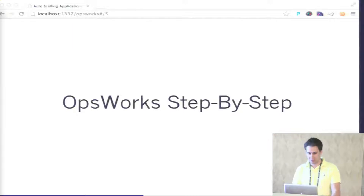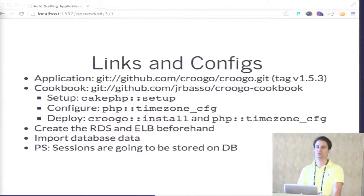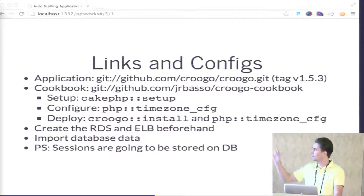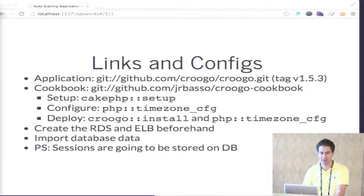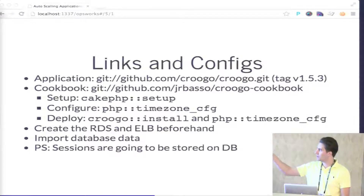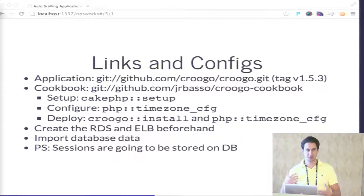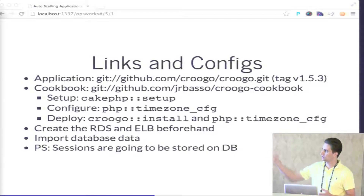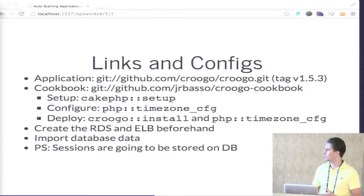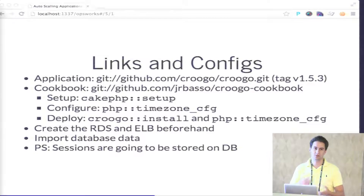I'll be showing a step-by-step of OpsWorks. I'm using Krogo to demonstrate — I have the GitHub account for Krogo, using tag V153. I created a very simple cookbook. In my cookbook, I create a CakePHP setup: every time you start a new VM, I do some setup — install CakePHP with the PEAR package, do a configure that changes the timezone to UTC because by default PHP has it commented out, and when I deploy I also change the config just to make sure.